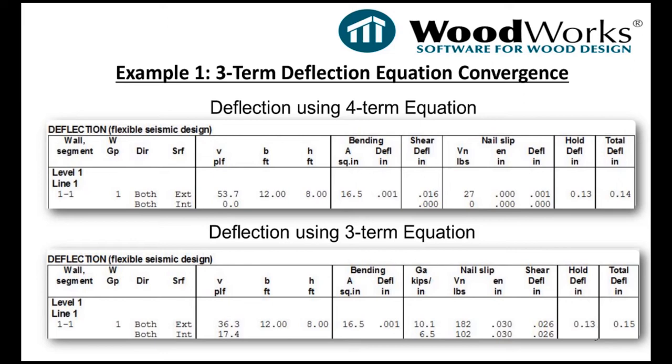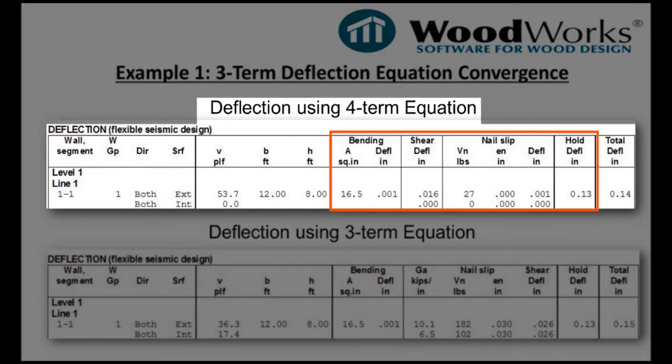Well, the software is programmed to equalize the deflection between the exterior and interior sheathing materials. Out of the four terms of the equation, the only terms that could be different between the interior side and exterior side are the shear and nail slip components.